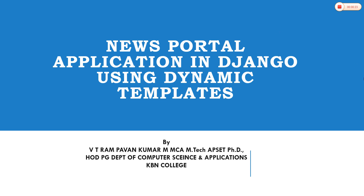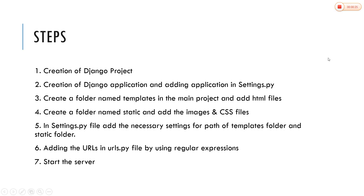So what are the steps for dynamic templates in Django for creating a news portal application? First, creation of a Django project; second, creation of a Django application; third, adding our application name in settings.py file; and we are going to create a folder called templates in the main project and add our HTML files, and create another folder called static where we add images and CSS files. In settings.py we will add the necessary settings for the path of the templates folder and the static folder.